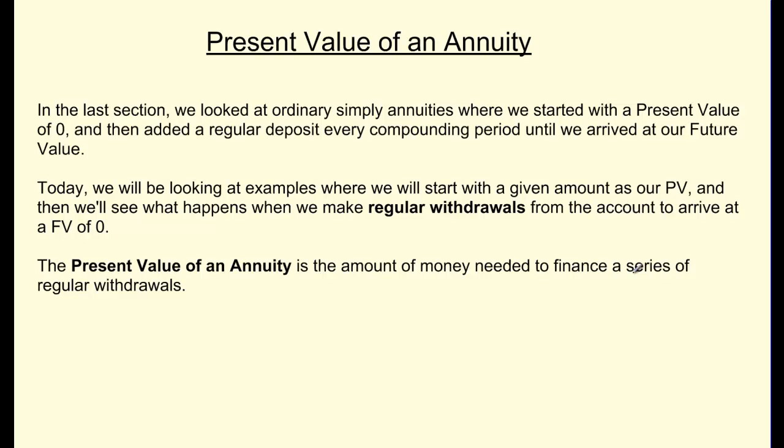In today's lesson, we're going to look at examples where you start with a present value but then make regular withdrawals away from the account before you arrive at a future value of zero. This is called the present value of an annuity and it uses a different formula than what we learned for a regular simple annuity.